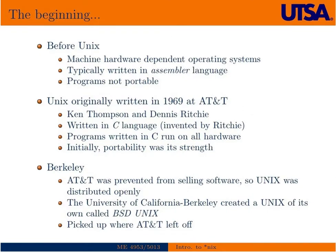To understand what a Unix operating system is, we have to go back to the beginning. Before Unix, there were certainly computers and operating systems, but they were typically machine hardware dependent. They were written in languages like Assembler, which is essentially a human-unreadable language that talks to the hardware. While these systems were very fast, they weren't portable. If you were running software written for Motorola hardware, you could not take it to HP hardware, which created a significant problem in writing applications for computers back then.